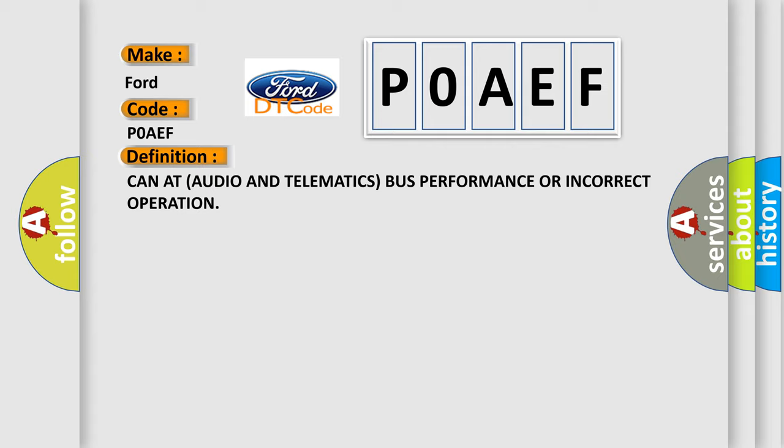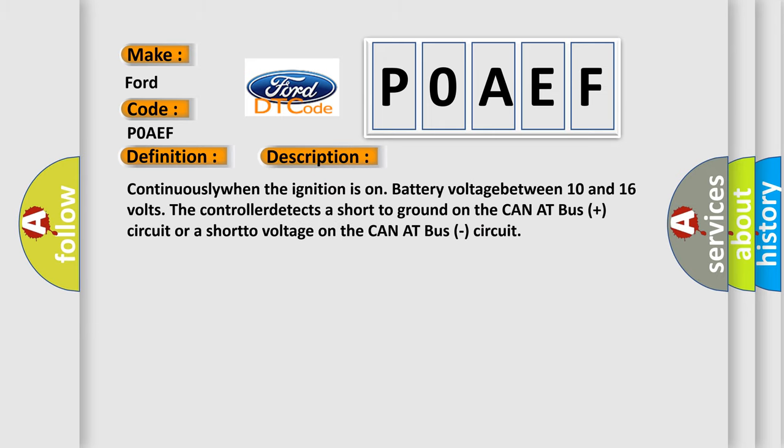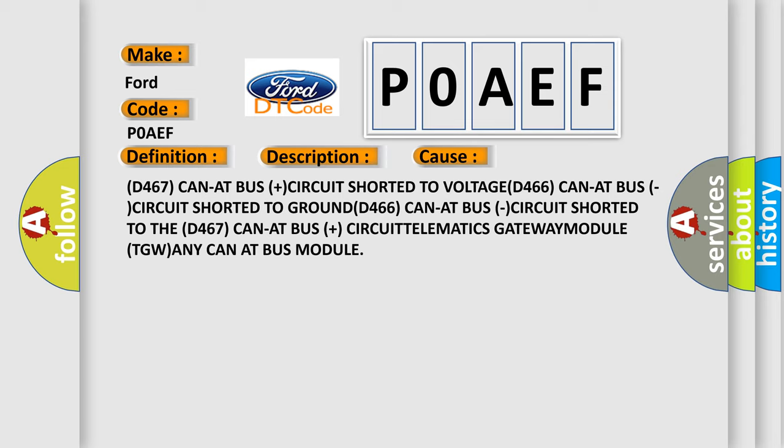Here is a short description of this DTC code. Continuously, when the ignition is on and battery voltage is between 10 and 16 volts, the controller detects a short to ground on the CANET bus plus circuit, or a short to voltage on the CANET bus circuit. This diagnostic error occurs most often in these cases: D-467 CANET bus circuit shorted to voltage, D-466 CANET bus circuit shorted to ground, D-466 CANET bus circuit shorted to D-467 CANET bus plus circuit, telematics gateway module (TGW), or any CANET bus module.